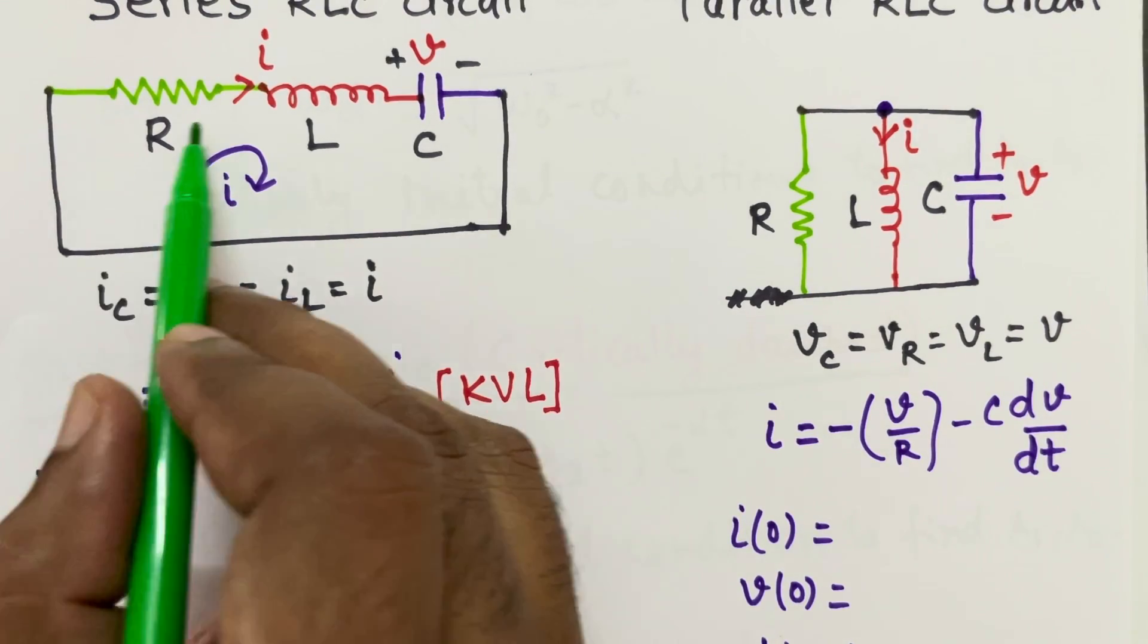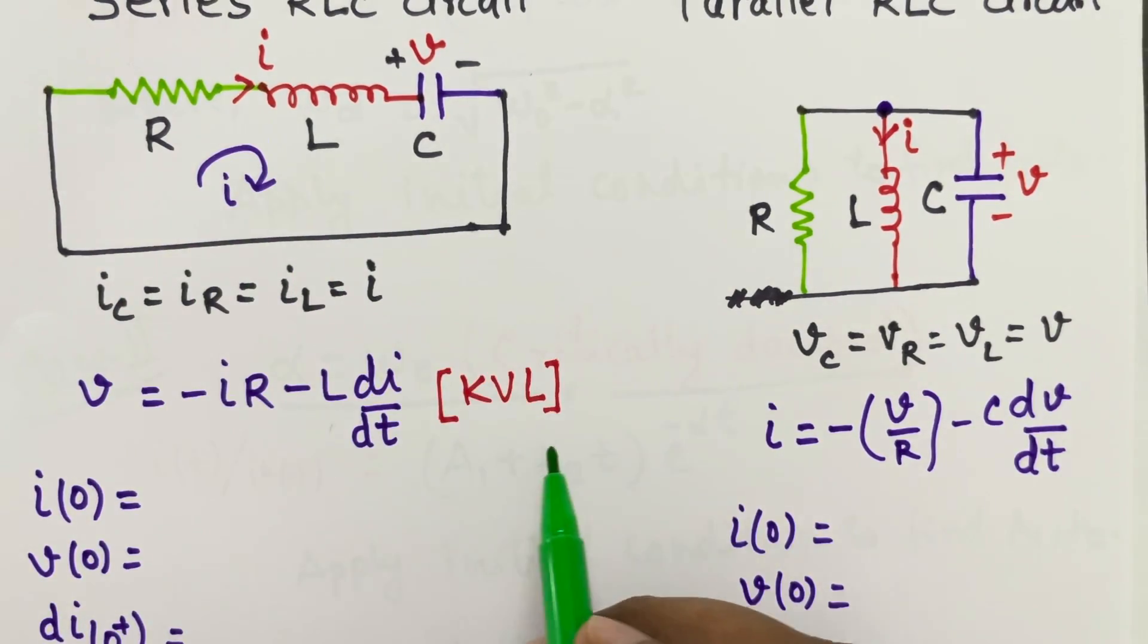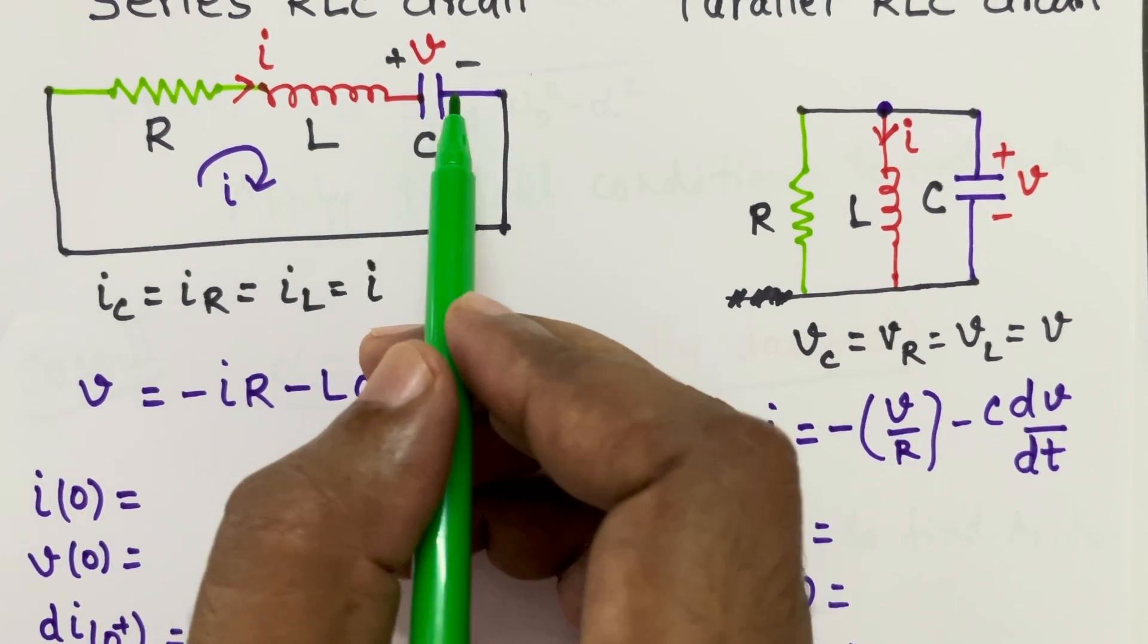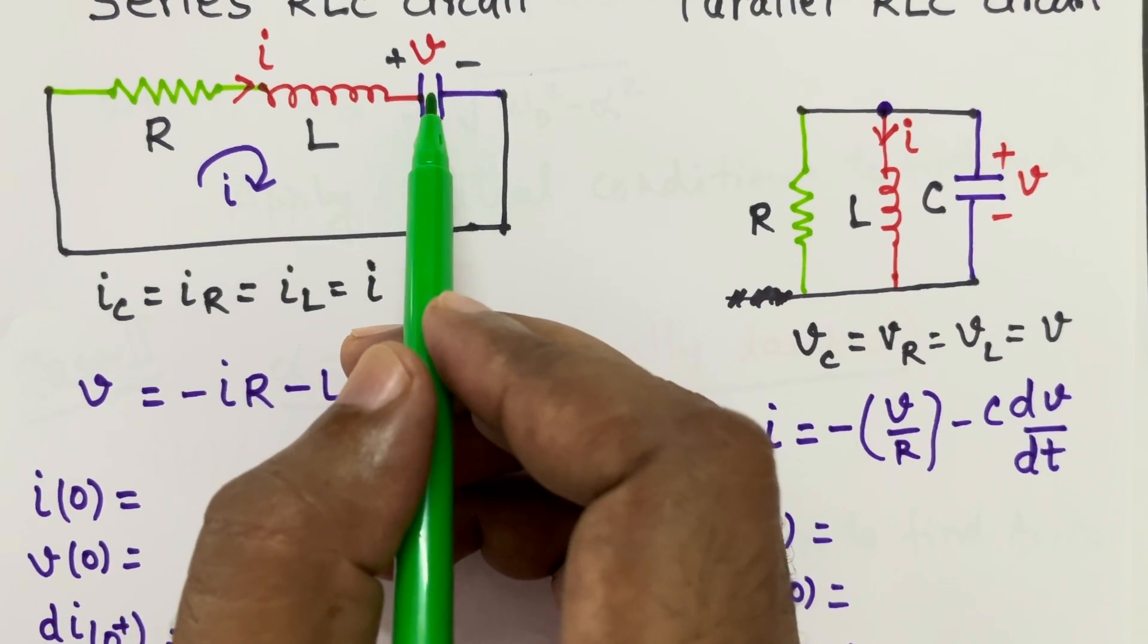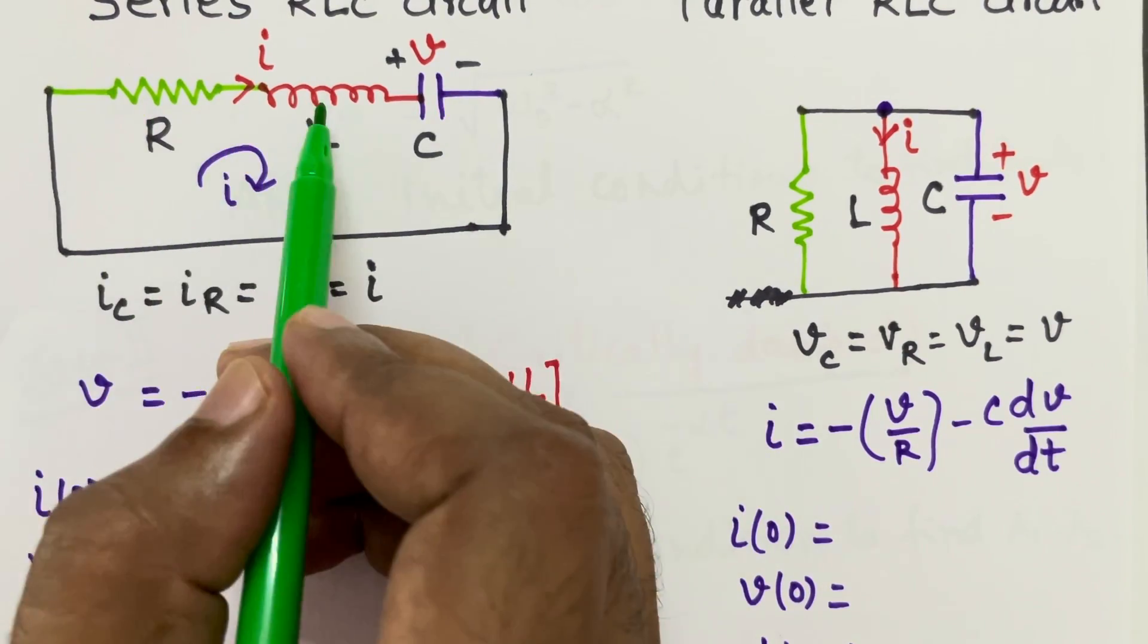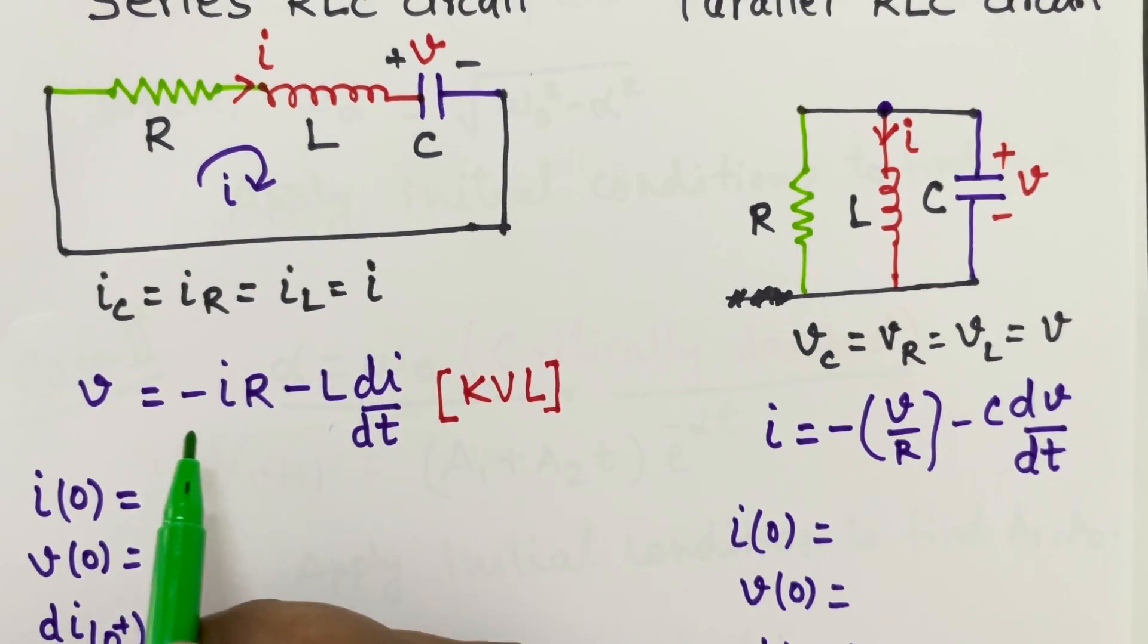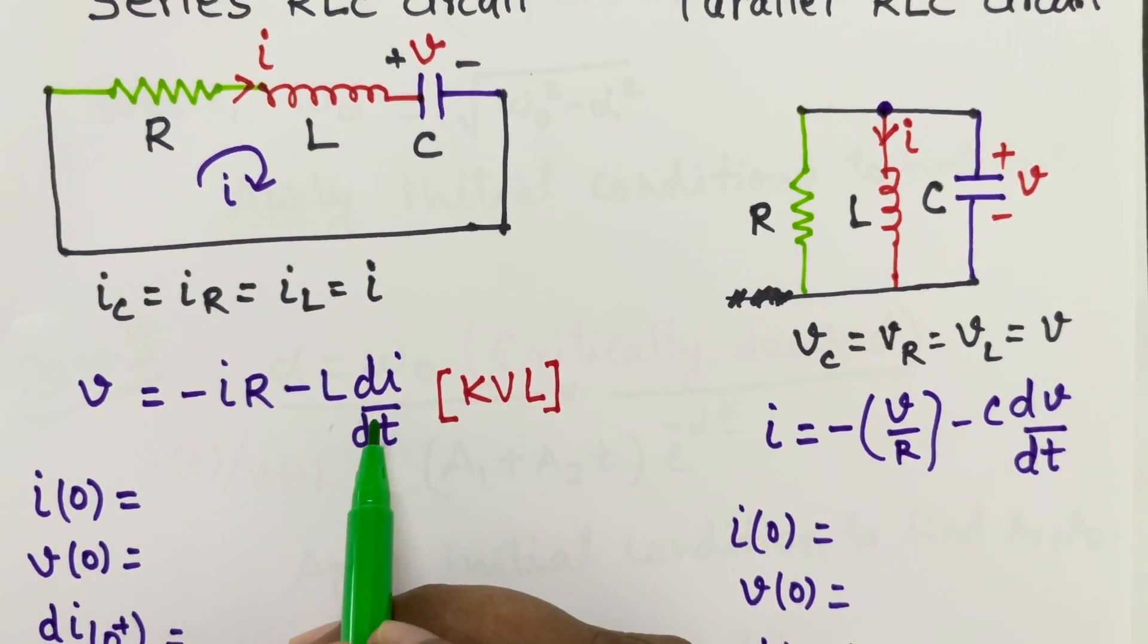Here since this is a loop, we can apply KVL and KVL if you apply and find out voltage across this capacitor, it will be negative of voltage across these two components because the total voltage should be zero and that is equal to minus IR minus L dI by dT which is from the KVL.